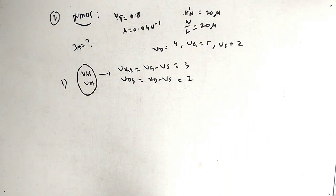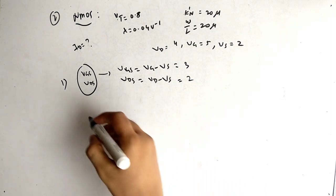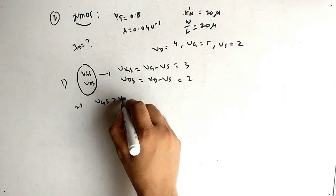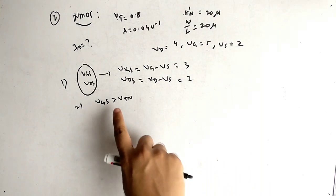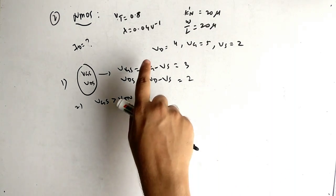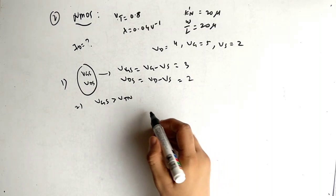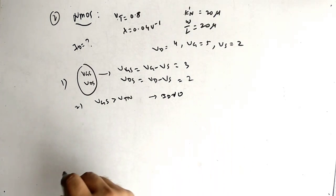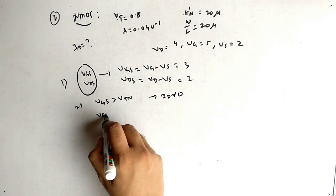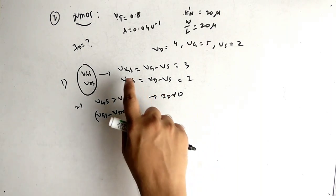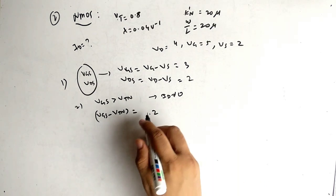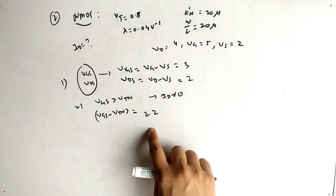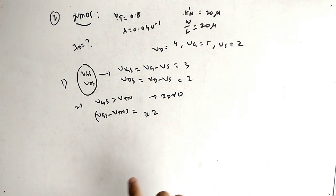VGS = VG − VS = 5 − 2 = 3 V. VDS = VD − VS = 4 − 2 = 2 V. Check: is VGS > VTN? VGS = 3 V > VTN = 0.8 V, so ID ≠ 0. Now compute VGS − VTN = 3 − 0.8 = 2.2 V.